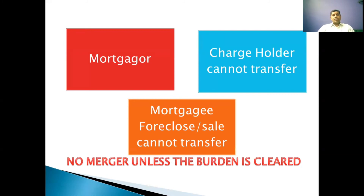In case of a charge holder, the owner of the property can create a charge on the property, either by act of party or by operation of law. If the charge holder's charge is not cleared by the owner of the property, then the charge holder has a right to the property and the owner of the property cannot sell the property. This is what Section 101 speaks about — no merger unless the burden is cleared. The burden of the property must be cleared before the merger will take place. Subsequent encumbrances will not be allowed.